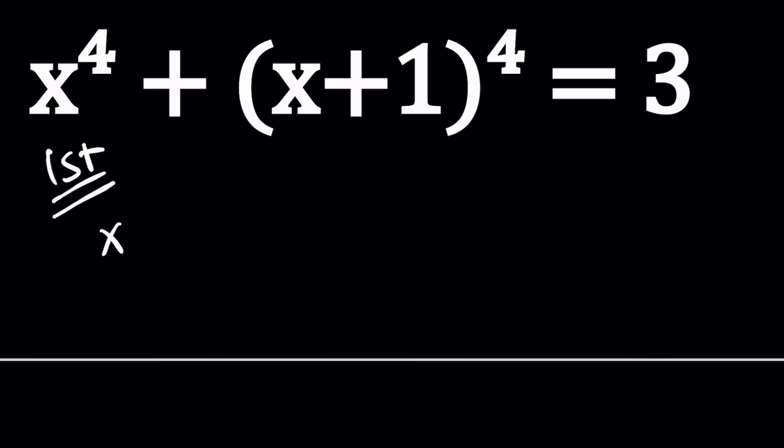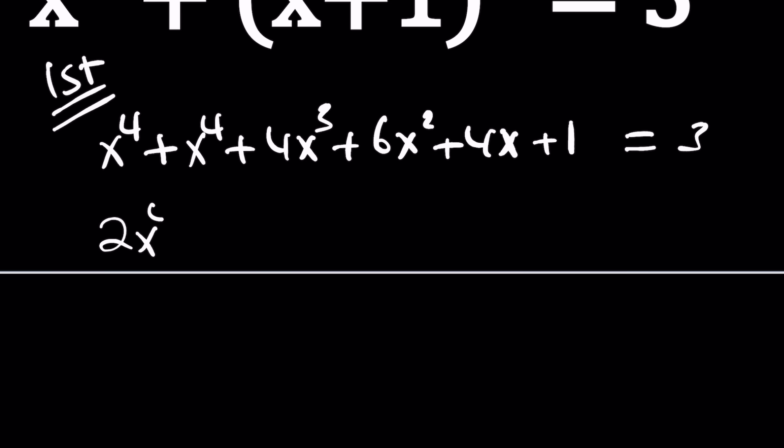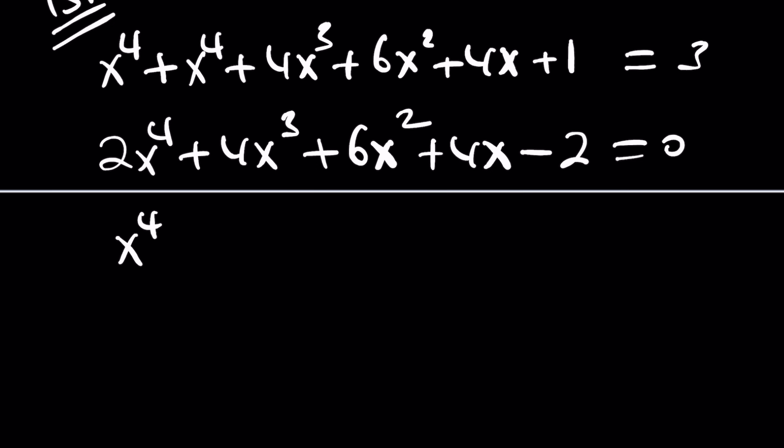I'm going to go ahead and expand it. This is going to give me x to the fourth, 4x cubed, plus 6x squared, plus 4x, plus 1 equals 3. Now, x to the fourth plus x to the fourth is 2x to the fourth plus 4x cubed, plus 6x squared, plus 4x minus 2. I can divide everything by 2: x to the fourth plus 2x cubed, plus 3x squared, plus 2x, minus 1 equals 0.